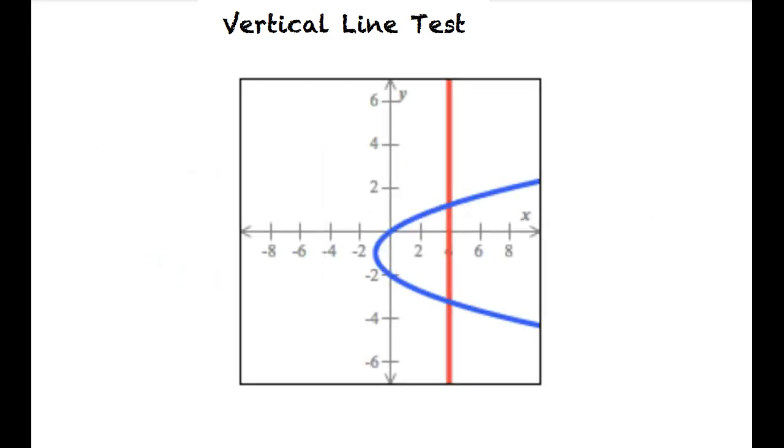Let's take a look at this fourth graph. This graph would not be a function because it fails the vertical line test by intersecting the graph twice.